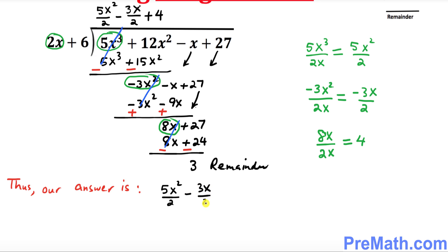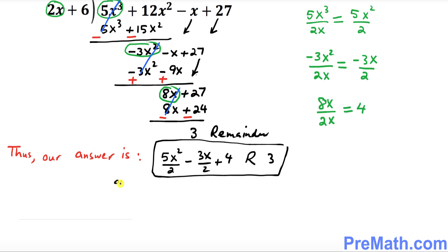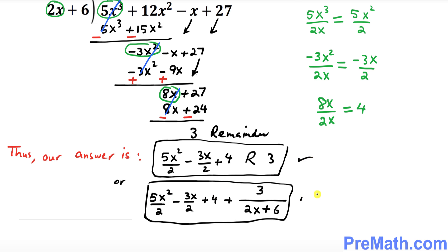Our complete answer is the quotient: 5x squared over 2 minus 3x over 2 plus 4, with remainder 3. Your professor may ask you to write it differently — you can also write it as 5x squared over 2 minus 3x over 2 plus 4, plus 3 over (2x plus 6). Both forms are acceptable. Thanks for watching and please subscribe to my channel for more exciting videos.